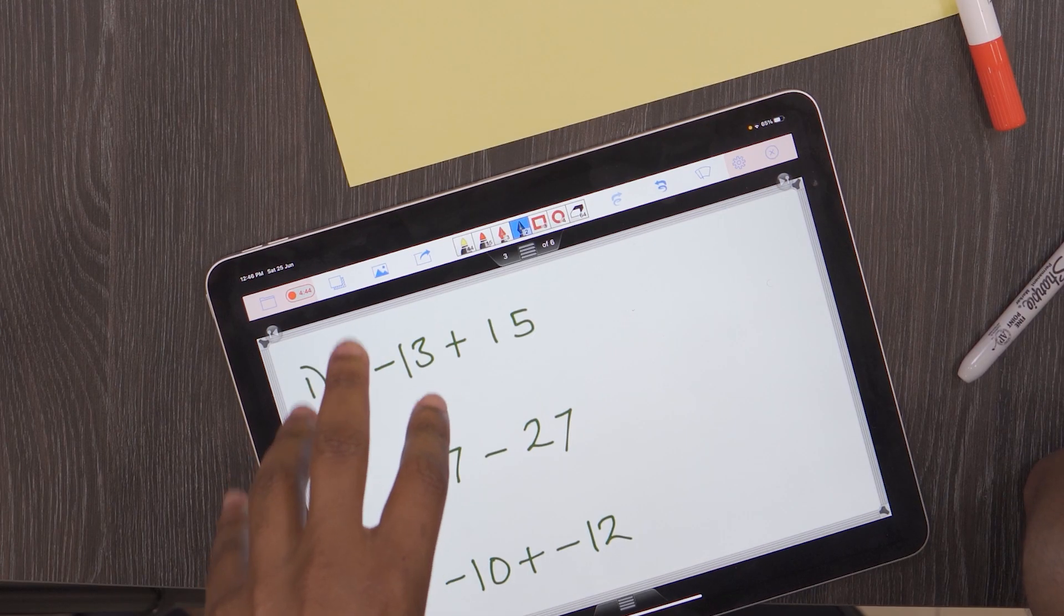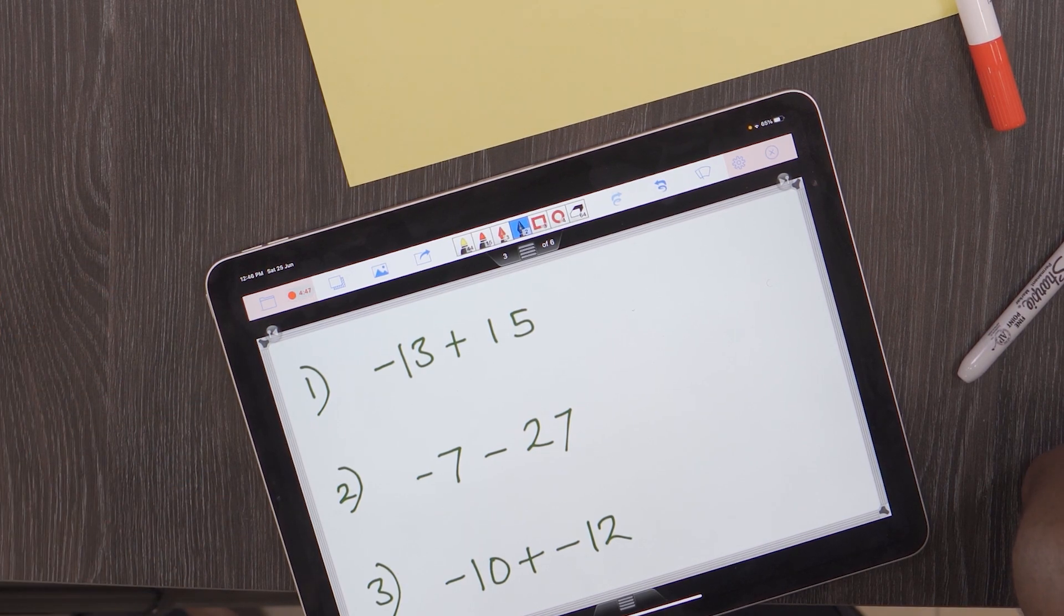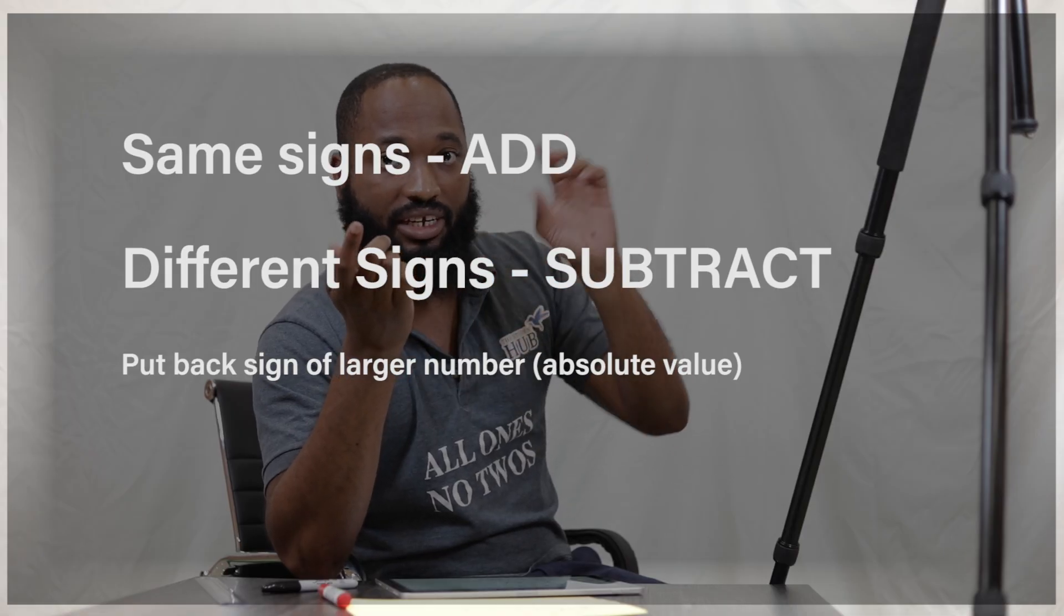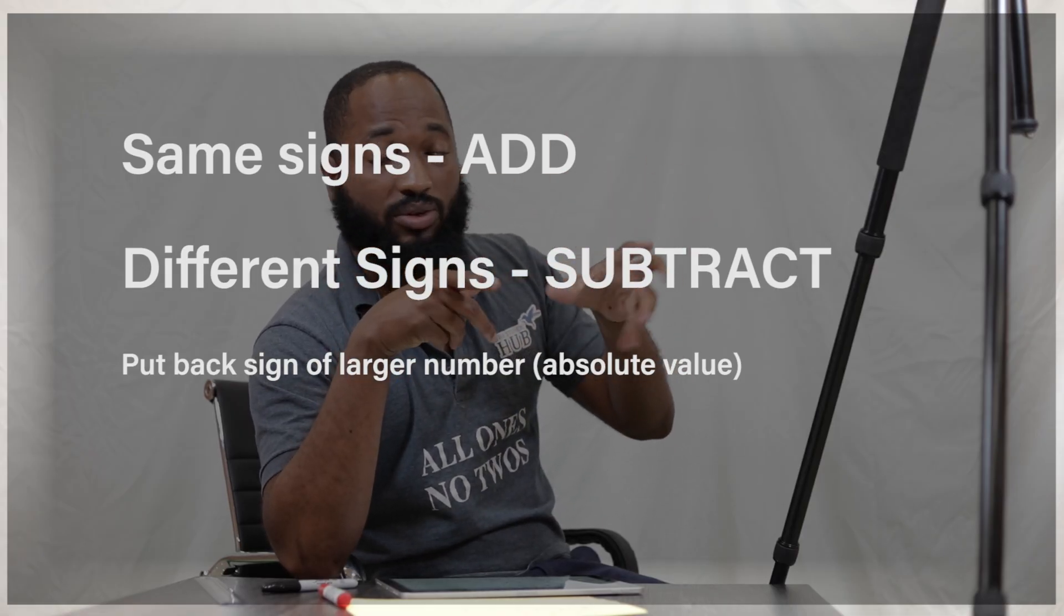The problem arises with larger numbers - you can't draw a number line for everything. So there's a rule that we use. I'm just going to tell you the rule and make it simple. If the signs are different, you subtract the absolute values of the numbers and put back the sign that was bigger. If the signs are the same, you just add and put back the sign. Same signs: add, put back the sign. Different signs: subtract the absolute values, put back the sign of the larger number.